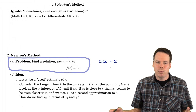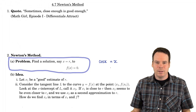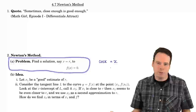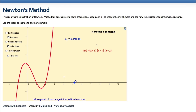Before we get into the details, let's get a big-picture view of what Newton's method actually is, using the applet available on the website. We have a function in red with three roots — I've chosen it so we can easily see them: negative 1, 1, and 2 — and I'd like to discuss the idea of how to approximate these roots.